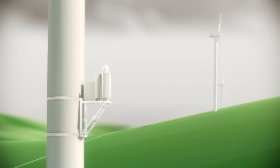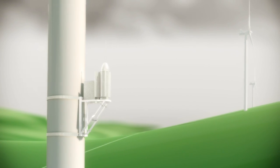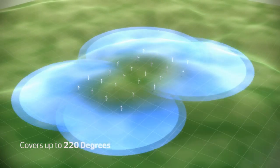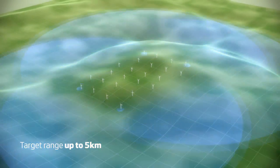The main feature of Ocus is the powerful low-energy radar system. Each radar covers up to 220 degrees and has a target range of up to 5 kilometers.